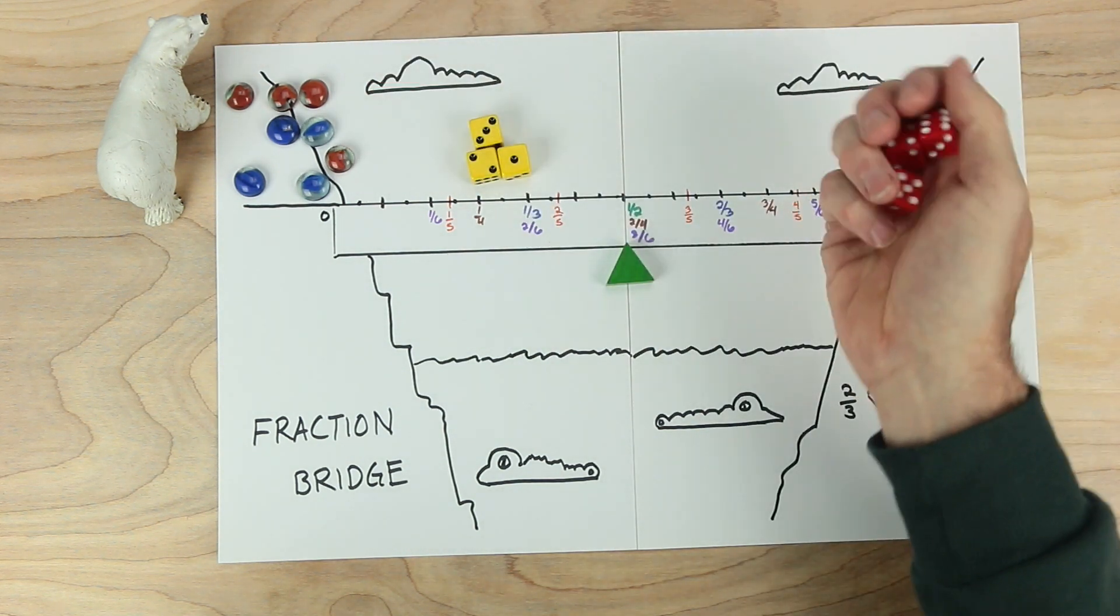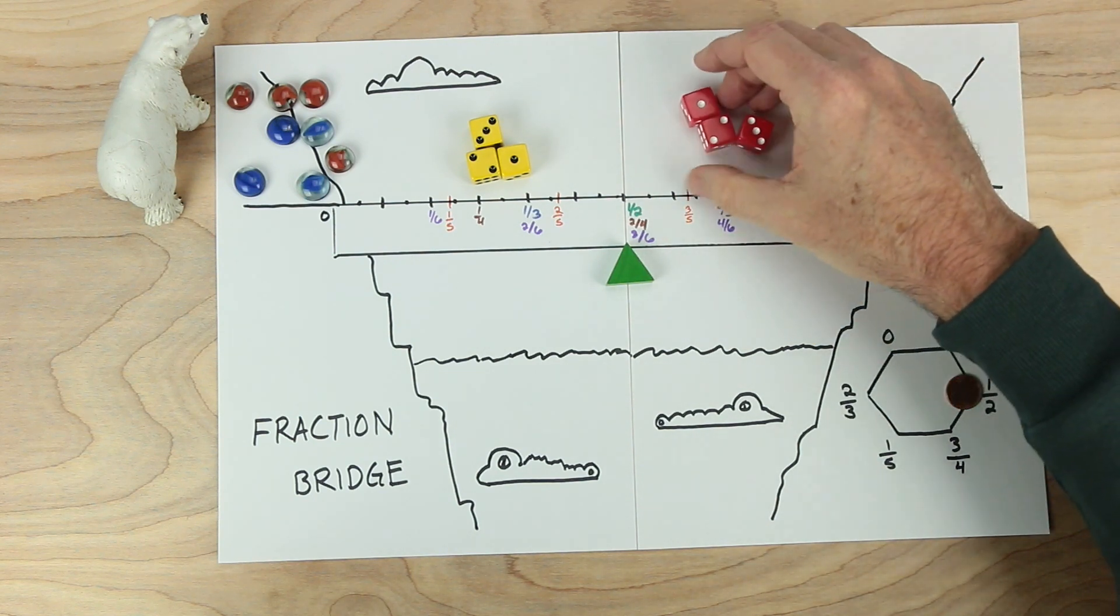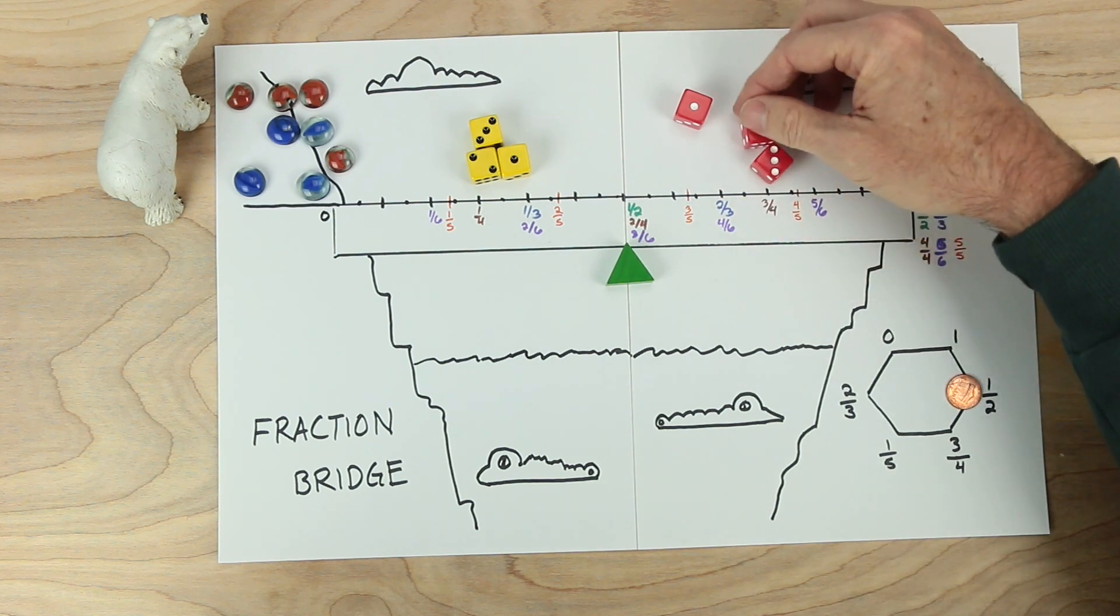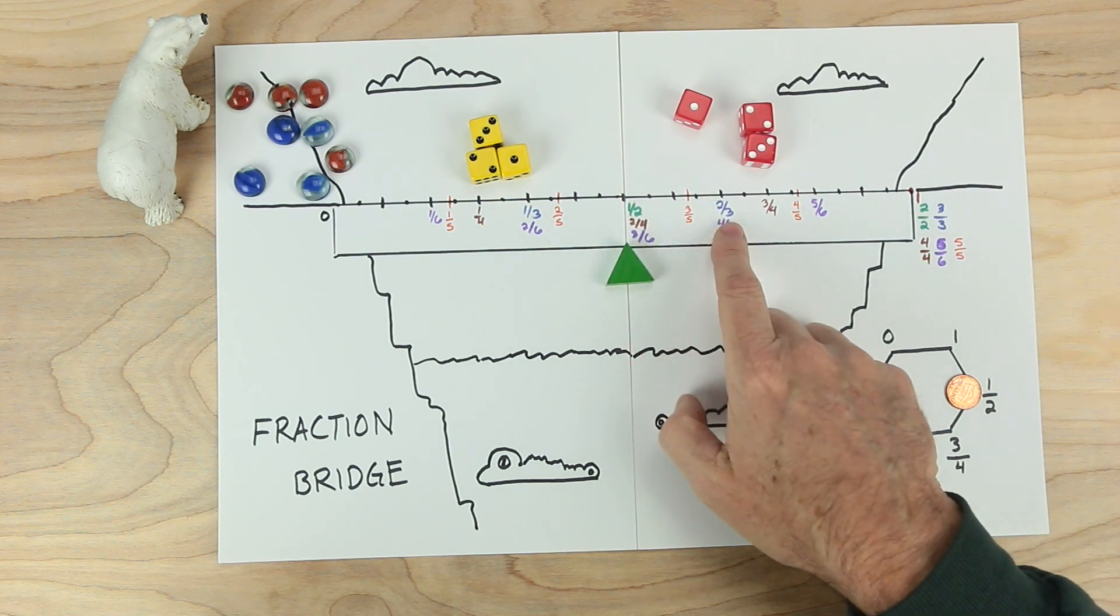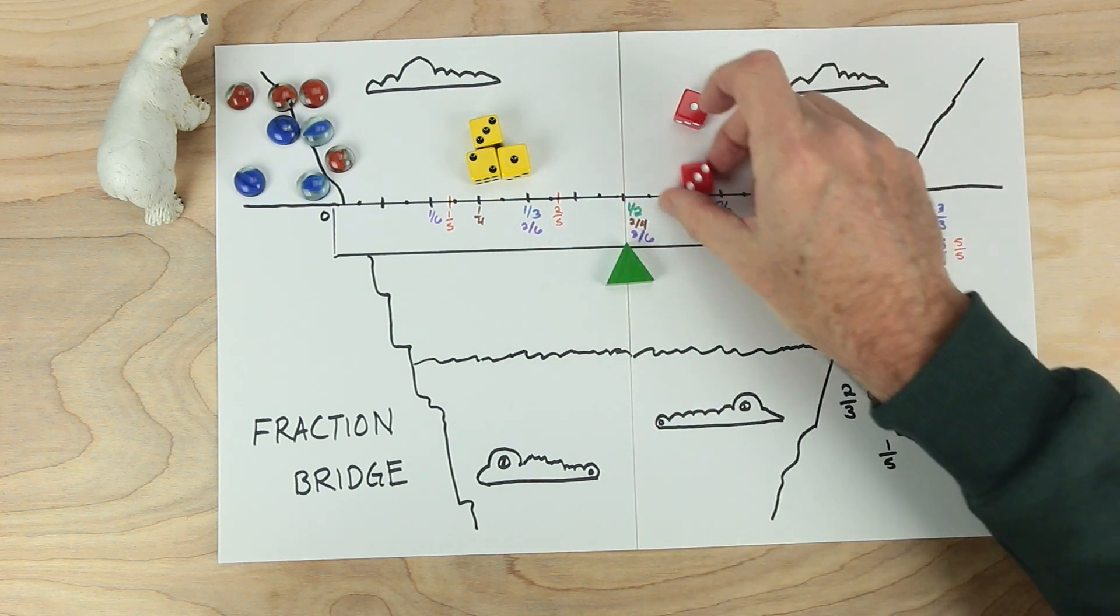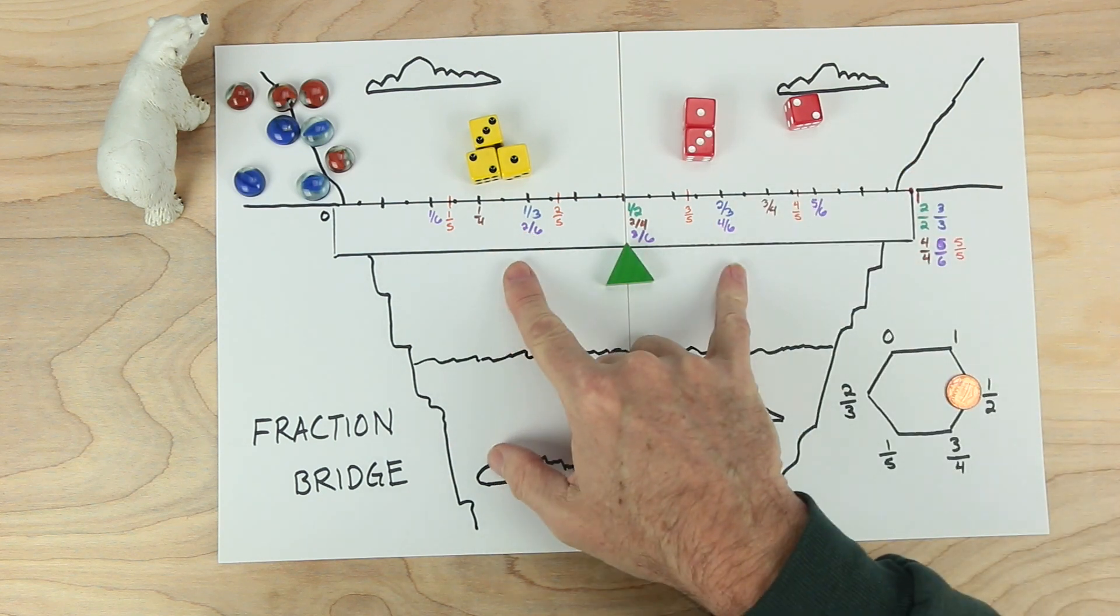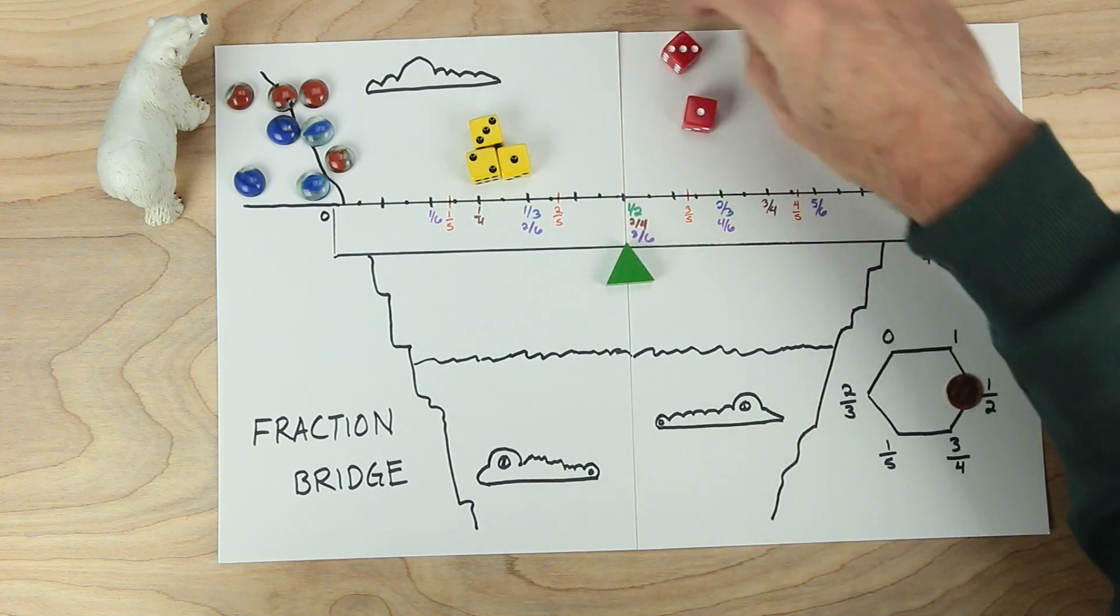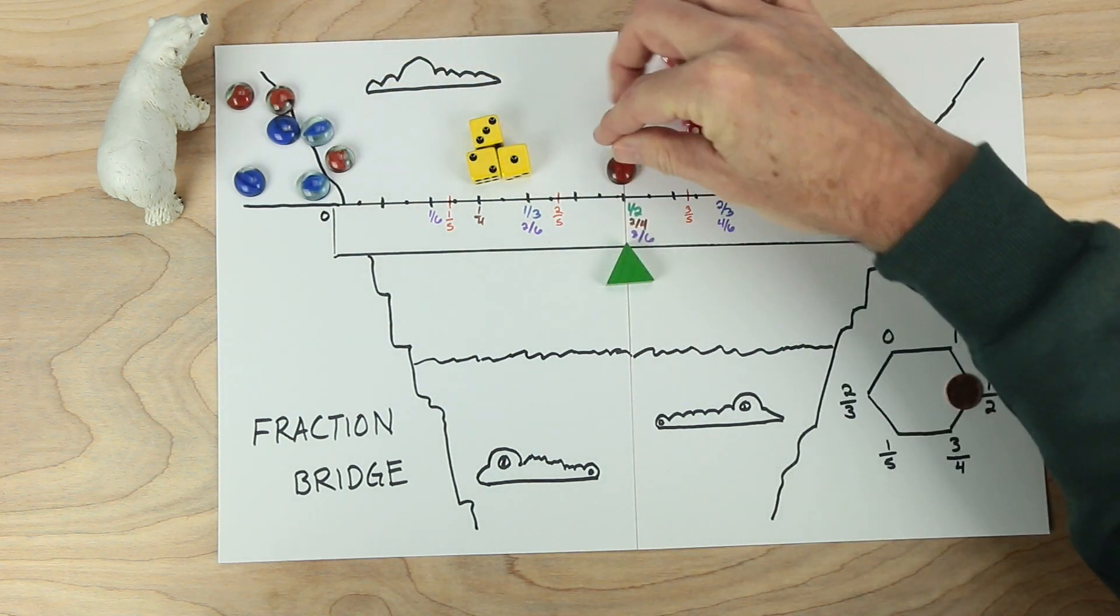So red is going to roll the dice and look at all the possibilities here, and try to find the fraction with the dice that is closest to one half. Red could make two thirds. Two thirds is here, but we want to be at one half. Red could also make one third. One third, but that's over here. That's equal distance. That's not close to a half. What else could red do? Oh, red could make one half. So red moves a piece onto the bridge to one half.